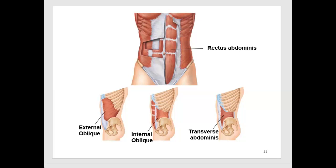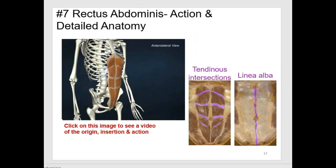The internal oblique's muscle fibers go in the opposite direction from the external oblique. The transverse abdominis has muscle fibers that go completely horizontal, connecting the vertebral column with the front of the trunk. The rectus abdominis has an origin at the crest of the pubic symphysis, and the insertion is the xiphoid process as well as the costal cartilages of ribs 5 through 7. When these two points come closer together, it flexes the vertebral column.